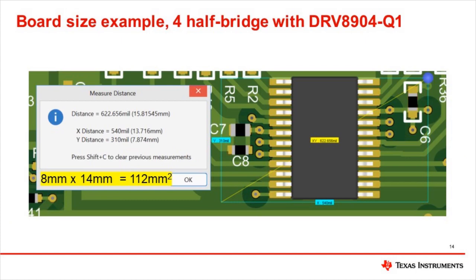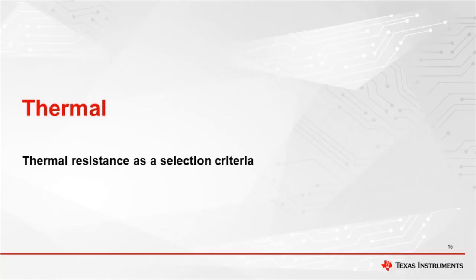For low-current motors such as mirror XY adjustment and ventilation dampers, the multi-channel DRV8904Q1 provides an even more compact design. For load currents up to 1 amp per output, as many as 12 half-bridges are available in the same package size. When driving motor loads, thermal considerations can also be of high importance. Thermal issues are related to package size and current levels with additional constraints and trade-offs.